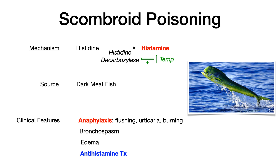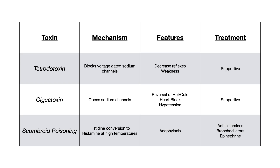Here's the summary. For tetrodotoxin, think Tetris — you need good reflexes. For ciguatoxin, think 'sig' — you open your mouth to smoke a sig. And scombroid poisoning, or histamine poisoning, is due to histamine and resembles anaphylaxis. What I want you to take away is the mechanism and the one key unique feature — if they give you either of those on an exam, you can usually get the question right.